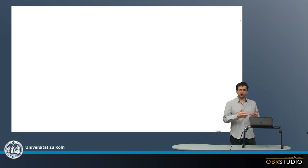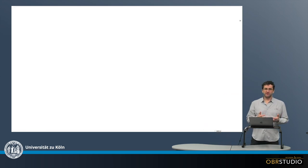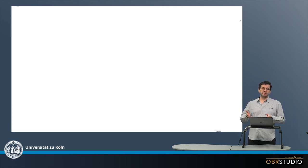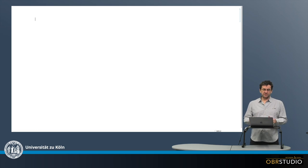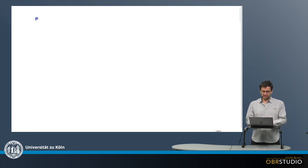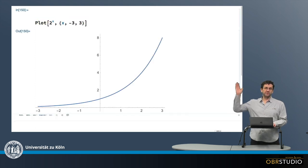I'd like to show in a more playful way why the derivative of e to the power of x is also e to the power of x. A certain number to the power of x is an exponential function. For example, 2 to the power of x, with x on an interval from say minus 3 to 3, is a certain exponential function.